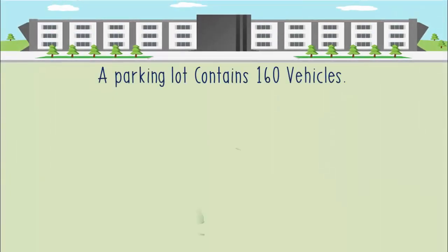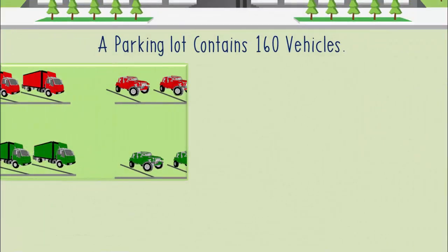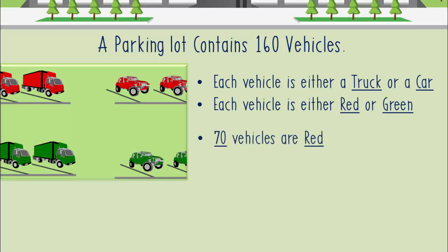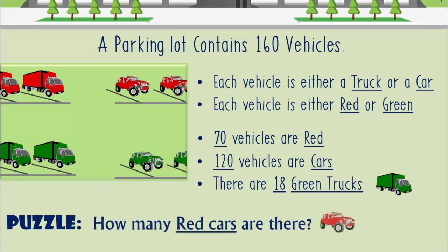A parking lot contains 160 vehicles. Each vehicle is either a truck or a car, and each vehicle is either red or green. 70 vehicles are red and 120 vehicles are cars. There are 18 green trucks. How many red cars are there?